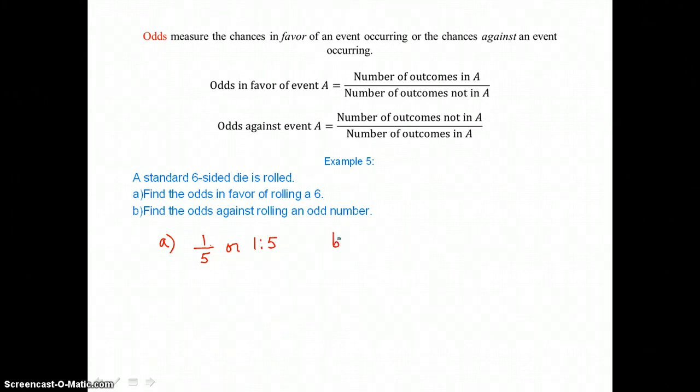In B, it says find the odds against rolling an odd number. Well, odds against rolling an odd number, the number of outcomes not in A are the three even numbers on this die. The number of outcomes in A is the three odd numbers on this die. So we have a 3 to 3 odds of rolling an odd number, or we want to write that as a 1 to 1 odds. Or again, we can write it as a 1 to 1 using the colon.